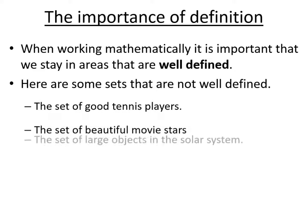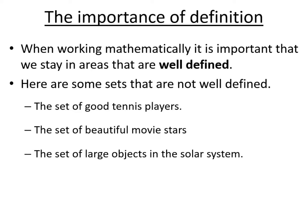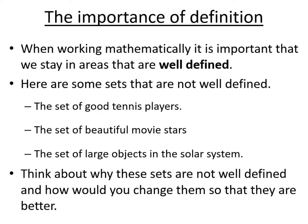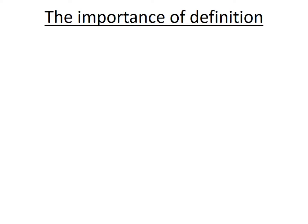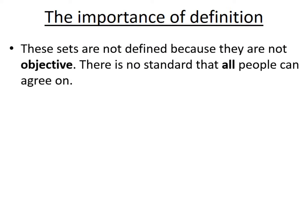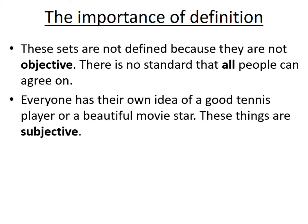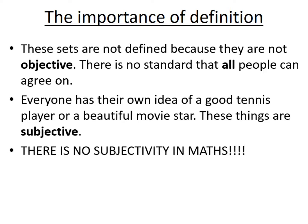Here are some sets that are not well defined: the set of good tennis players, the set of beautiful movie stars, and the set of large objects in the solar system. These sets are not well defined because they are not objective — they are subjective, which means they are based on what people might think or feel about them. Objective things are based on the quality of the object, and everything in maths should be objective.